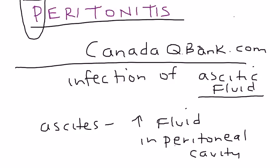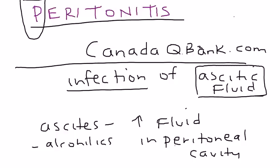Ascites can happen in alcoholics, and it can happen in a lot of tropical infections as well. Hepatitis is another cause. But when this ascitic fluid becomes infected, that's when you develop SBP, spontaneous bacterial peritonitis. It's a very basic definition.